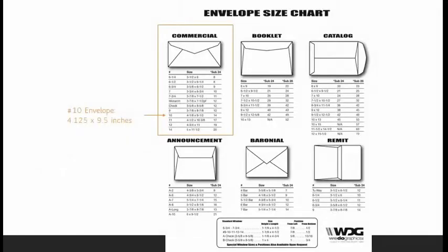Now, envelopes. There are many different sizes of envelopes for many different purposes. For business, your basic bread-and-butter envelope is going to be a commercial envelope — envelopes come in numbers, and your number 10 business envelope is going to be your standard. You can print out a piece of letter-sized paper, fold it into thirds, and put it into this envelope — it's the one you get your bills in. The dimensions are four and one-eighth by nine and a half inches.